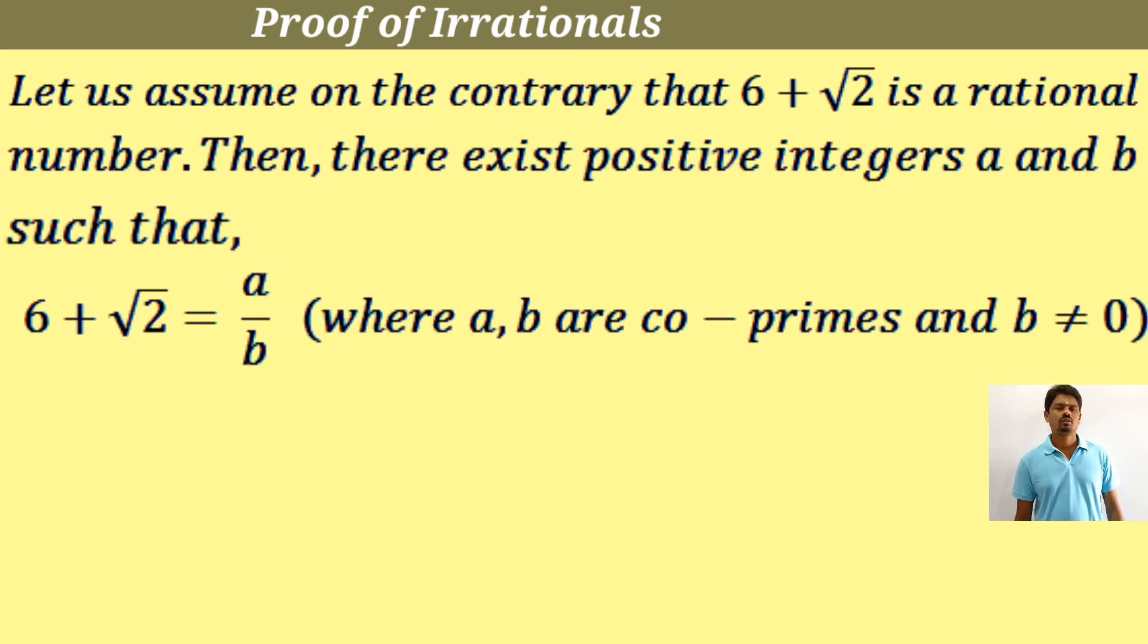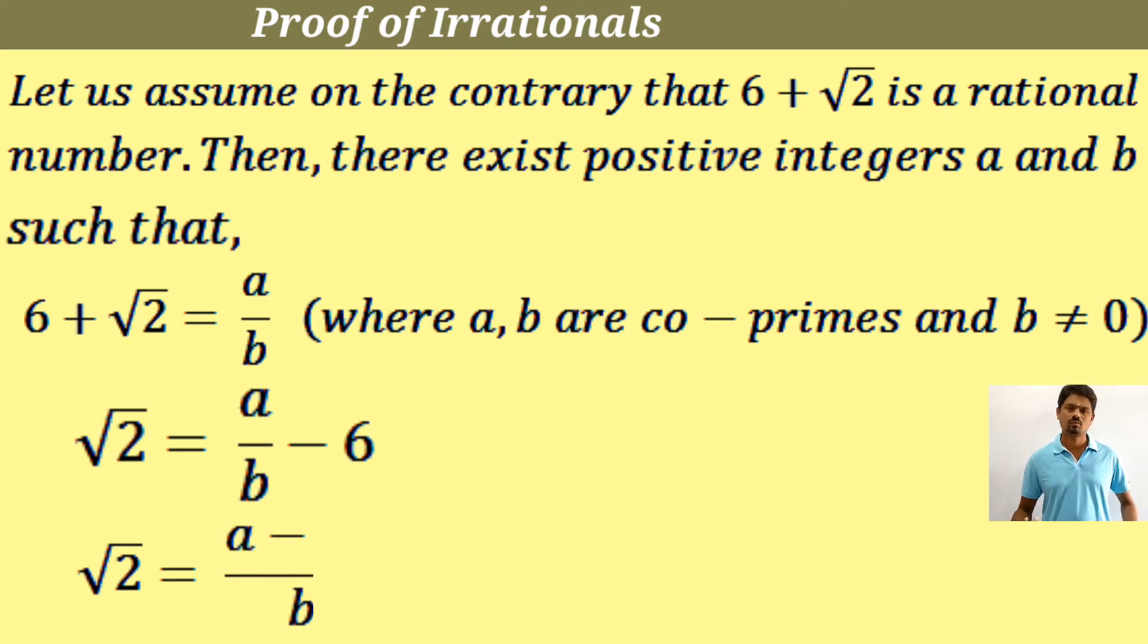Now we have to take 6 to the right side: 6 plus root 2 equal to a by b. Take 6 to the right side, we get root 2 is equal to a by b minus 6. Now write root 2 as usual on the left hand side. Now find LCM on the right side, we get root 2 equals a minus 6b divided by b.